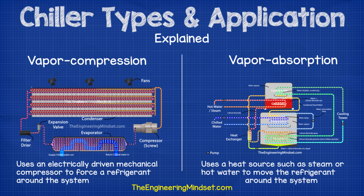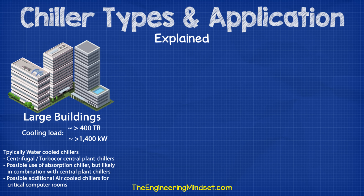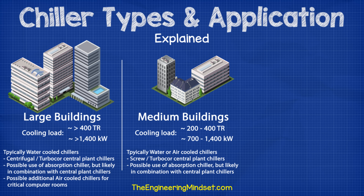Large buildings with cooling loads in excess of around 400 tons or 1,400 kilowatts typically use water-cooled chillers, usually with centrifugal-type or turbo-core-type compressors within the central plant cooling system. They might also use a separate, smaller air-cooled chiller to handle critical rooms such as computer and communication rooms. Medium-sized buildings with cooling loads of around 200 to 400 tons or 700 to 1,400 kilowatts will typically use screw compressors or turbo-core compressor chillers, which can be either water-cooled or air-cooled.